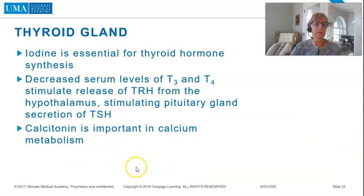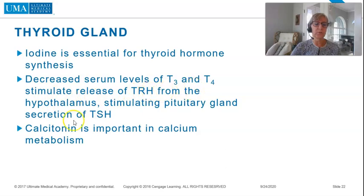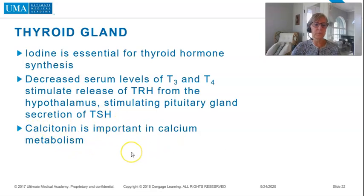Iodine is essential for thyroid hormone synthesis. Decreased serum levels of T3 and T4 stimulate release of TRH from the hypothalamus, which in turn stimulates pituitary gland secretion of TSH. Calcitonin is important in calcium metabolism.